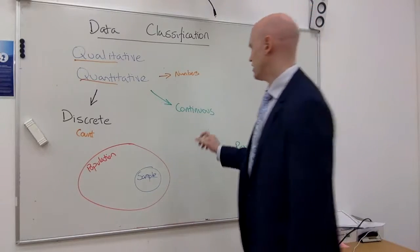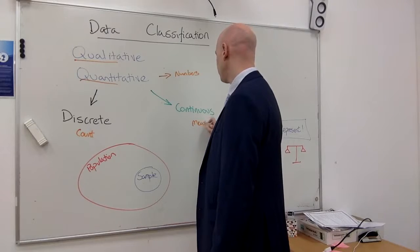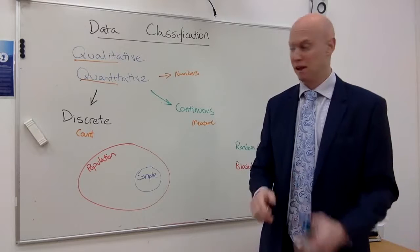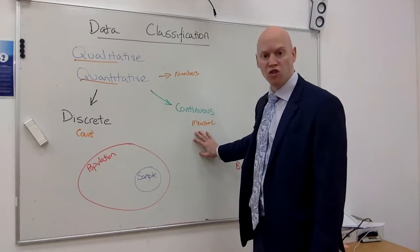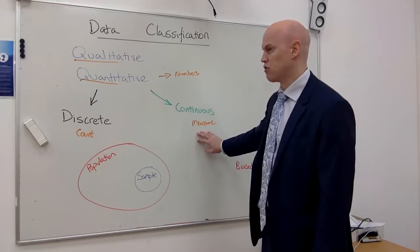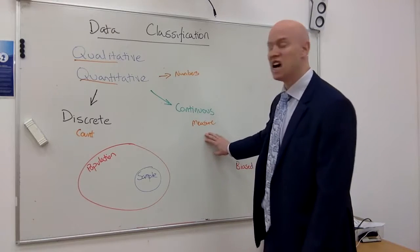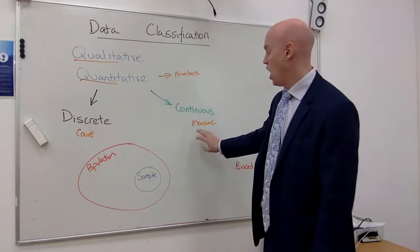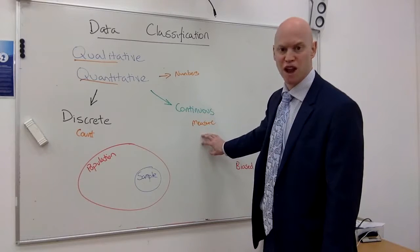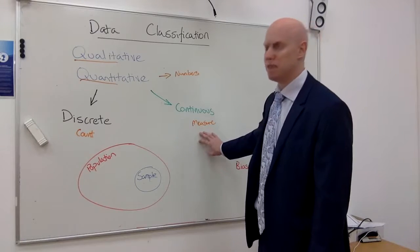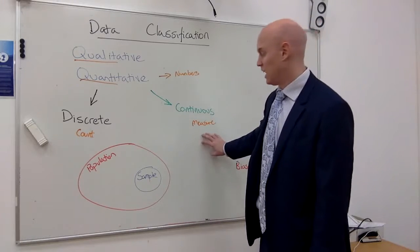Continuous data is data that we measure. And depending on how accurately we measure, you can have a certain amount. So you can have 400 grams of eggs in the basket, 322 grams of eggs in the basket, 429 grams of eggs in the basket. If we're measuring it, grams, it's continuous, or centimeters, or meters, or kilograms.